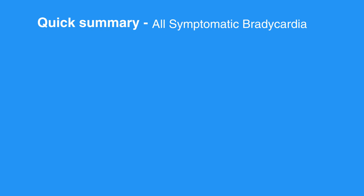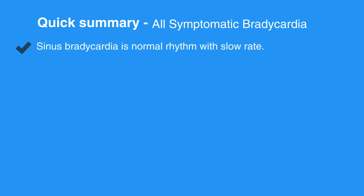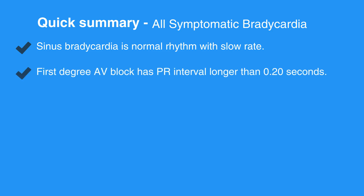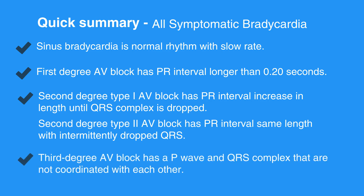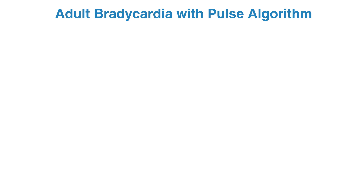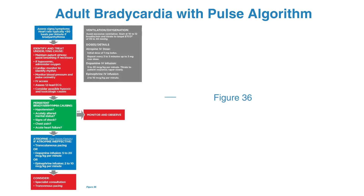Here's a quick summary of all the symptomatic bradycardia types. Sinus bradycardia is a normal rhythm with a slow rate. First degree AV block has a PR interval longer than 0.20 seconds. Second degree type I AV block has a PR interval increasing in length until the QRS complex is dropped. Second degree type II AV block has a PR interval of the same length with intermittently dropped QRS complexes. Third degree AV block has P waves and QRS complexes that are not coordinated with each other. For the adult bradycardia with pulse algorithm, refer to figure 36 in your corresponding ACLS manual.